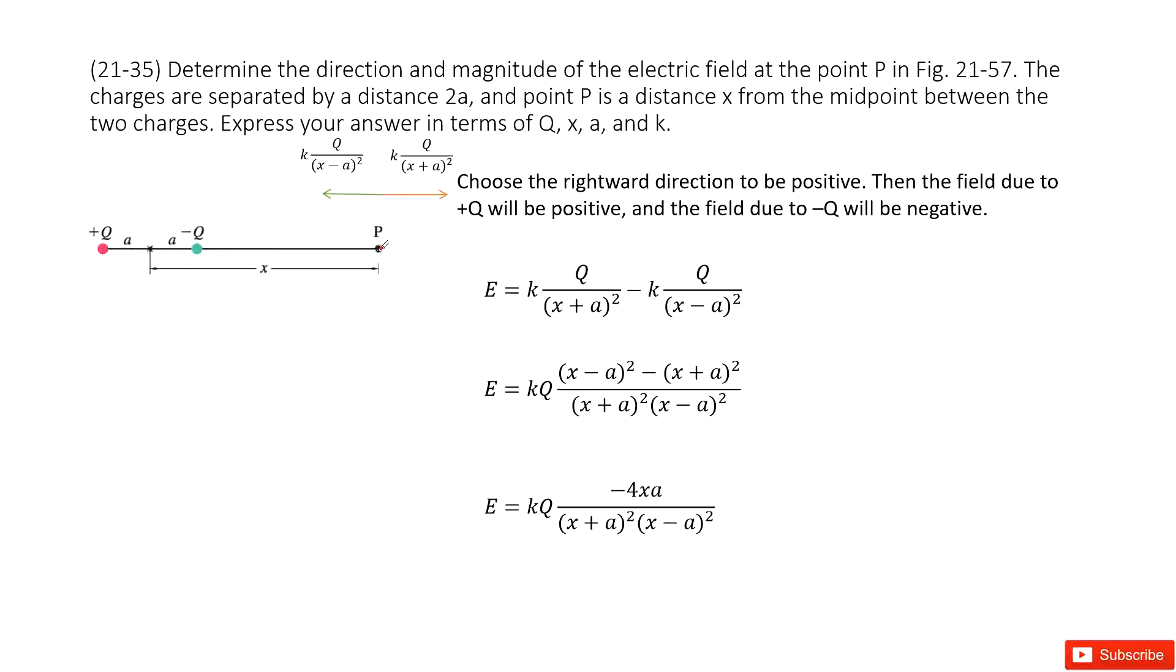So we look at P. We find the two charges are separated by the distance 2a located there. So we have two charges, positive Q and negative Q, placed there. The distance between the center point for these two charges with P is x, as this picture shows. So in this way, we can look at the picture.